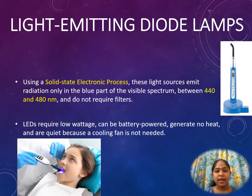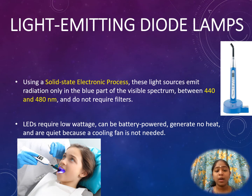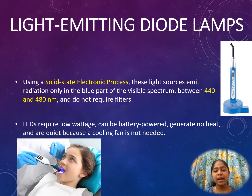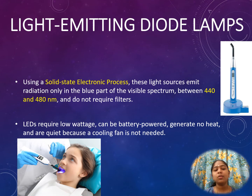Light emitting diode lamps, or LEDs, use a solid state electronic process. These light sources emit radiation only in the blue part of the visible spectrum, between 440 and 480 nanometers, and do not require filters. The solid state refers to the physical state of the lamp. On passing electric current, this light source emits photons that produce radiation in the visible spectrum between 440 and 480 nanometers. These are less damaging compared to previously used red LEDs and do not require filters. LEDs require low wattage and can be battery powered.